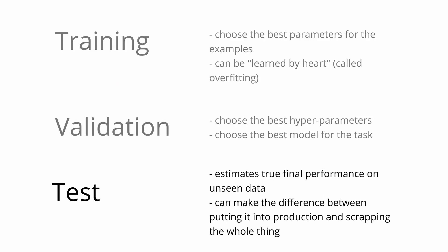So let's recap again we've already seen training data is for the parameters validation data is for choosing the model and now test data is to estimate the true final performance on unseen data as close as you can get to what it would be like in production and it can make a difference between putting it into production and scrapping the whole experiment and starting from fresh.